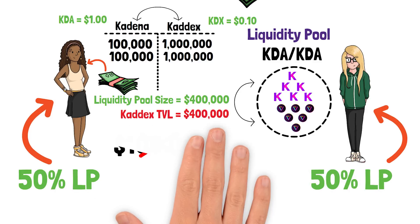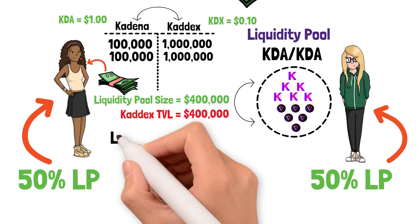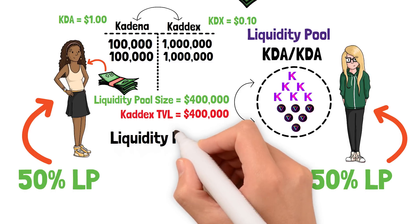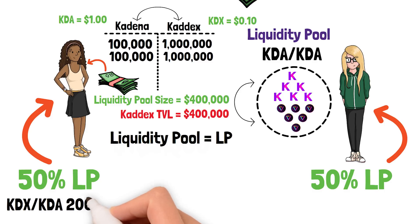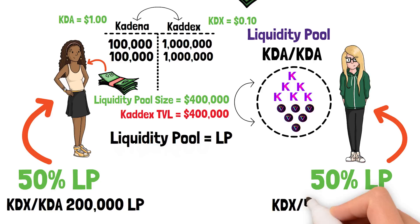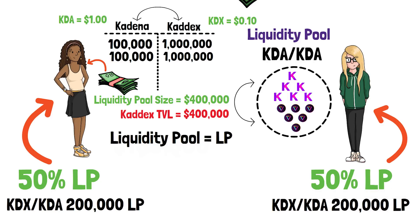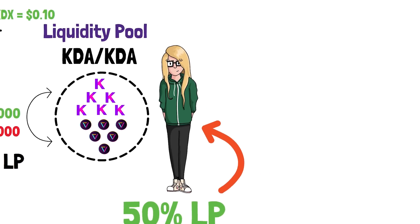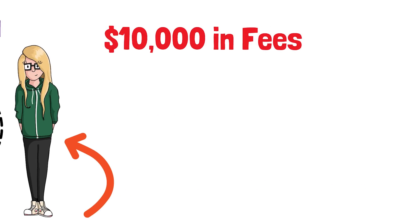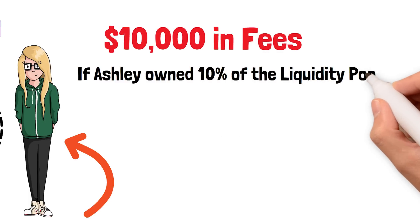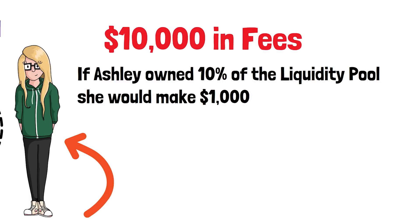This is where LP tokens come into play. LP tokens are what you receive when you add liquidity on a DEX — they represent your percentage of the liquidity in that specific pool. If Ashley deposited $100K in KDA and $100K in KDX, she would receive a KDX/KDA LP token representing $200,000 worth of liquidity. At the end of the day, if the DEX charged $10,000 in swapping fees and Ashley owned 10% of the pool, her rewards would be $1,000 for that day.